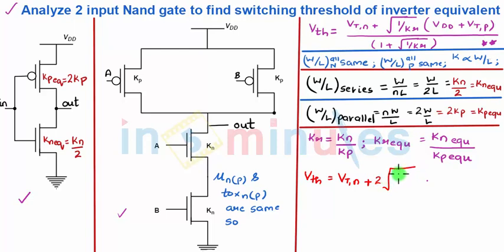It's 2, 2 square root of 1 by KR into VDD plus VTP.